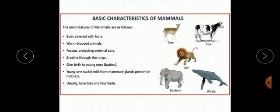They give birth to young ones. These animals feed the young ones with milk as they have mammary glands. They usually have four limbs and some of them have a tail too. Some examples of mammals are deer, cow, lion, elephant, and whale.